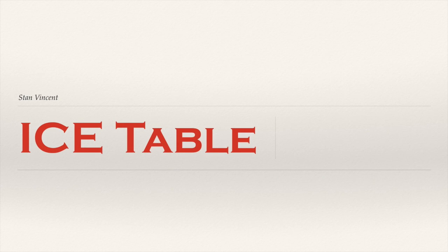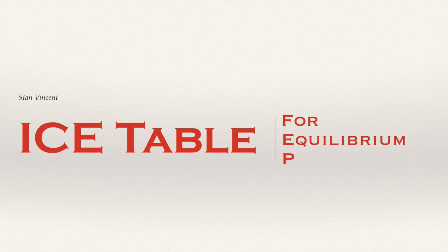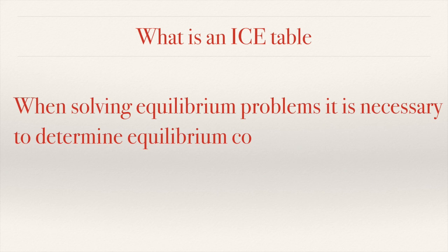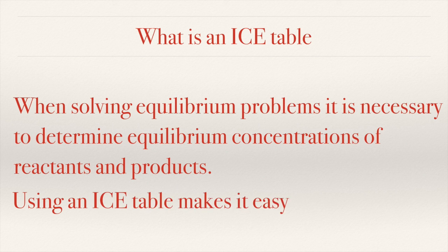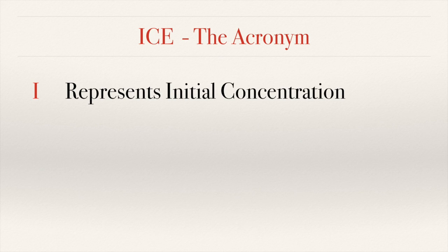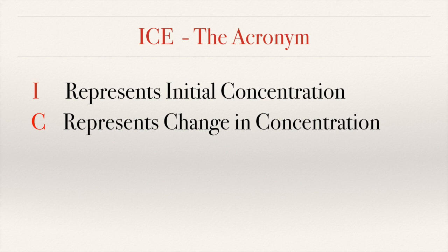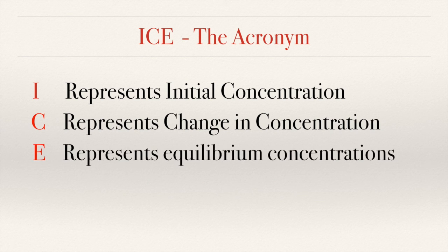In this video we will see how we can generate an ICE table so that we can substitute the equilibrium concentrations of reactants and products in an equilibrium constant expression and determine the value of K. When solving equilibrium problems it is necessary to determine equilibrium concentrations of reactants and products. The acronym ICE represents: I for initial concentration, C for change in concentration, and E for equilibrium concentrations.